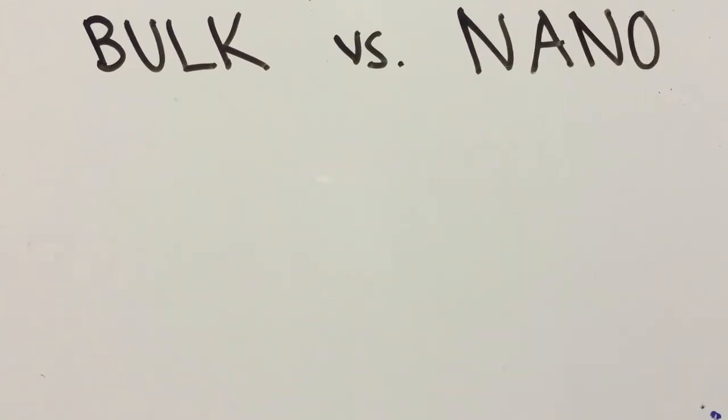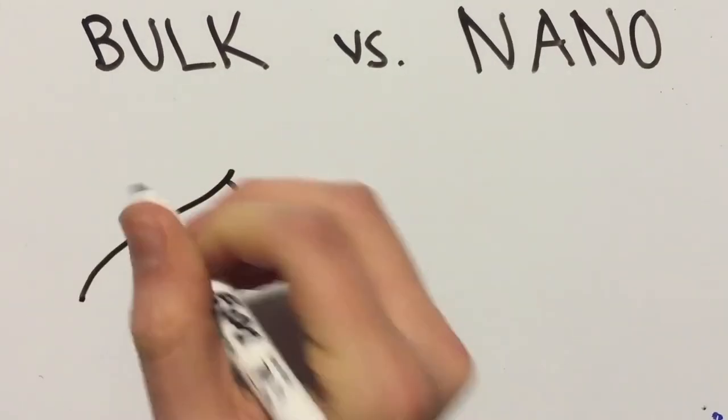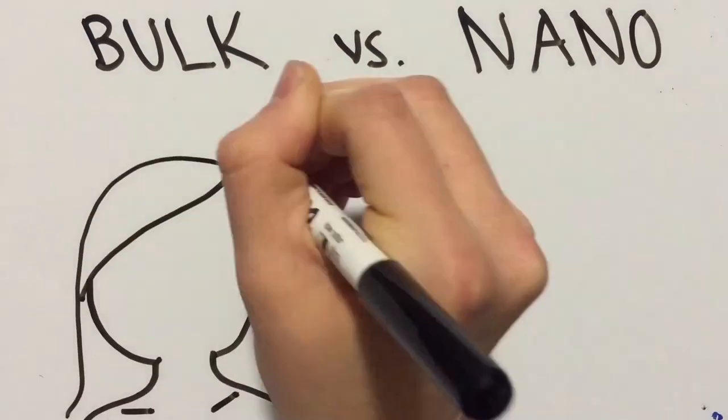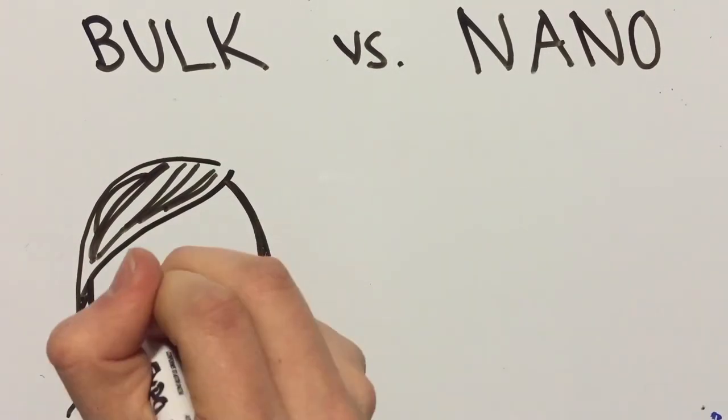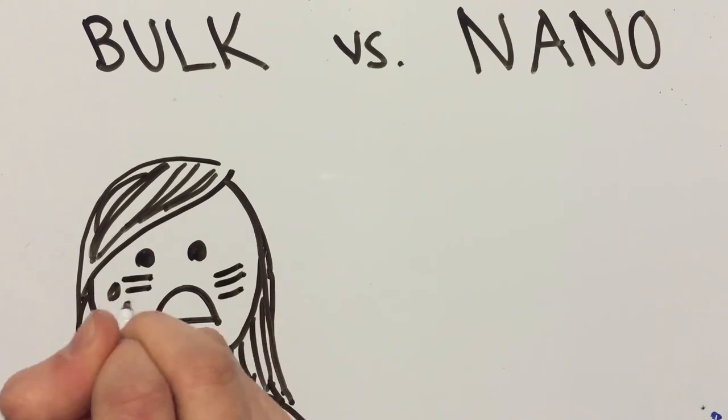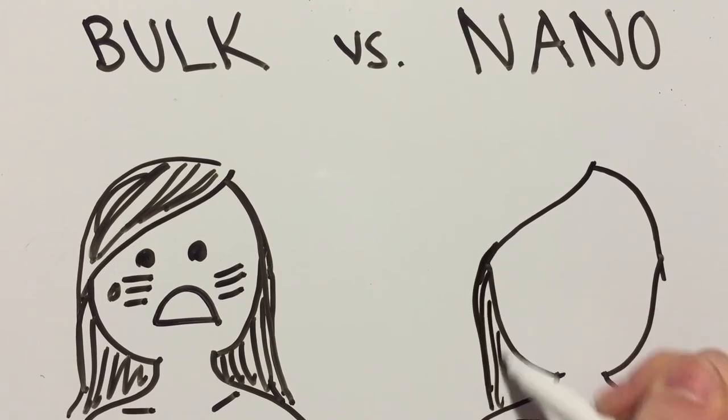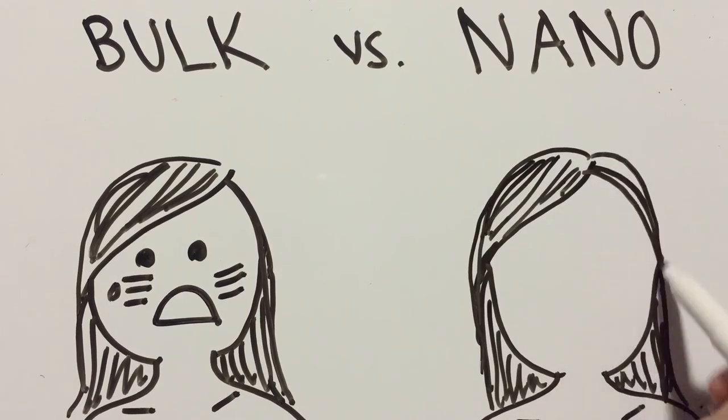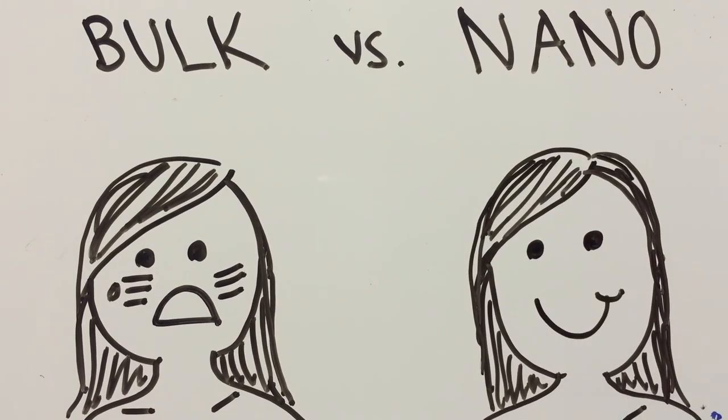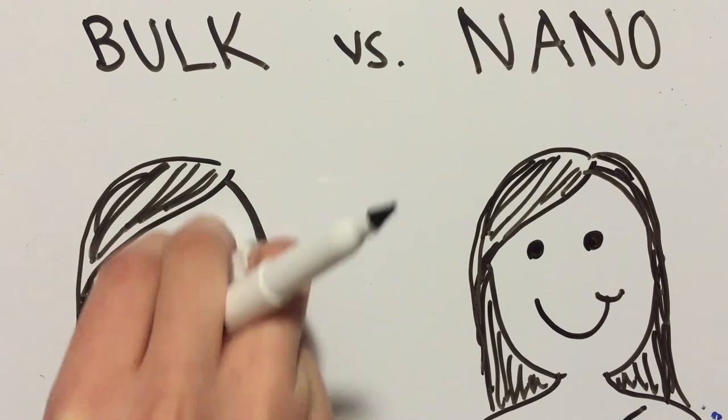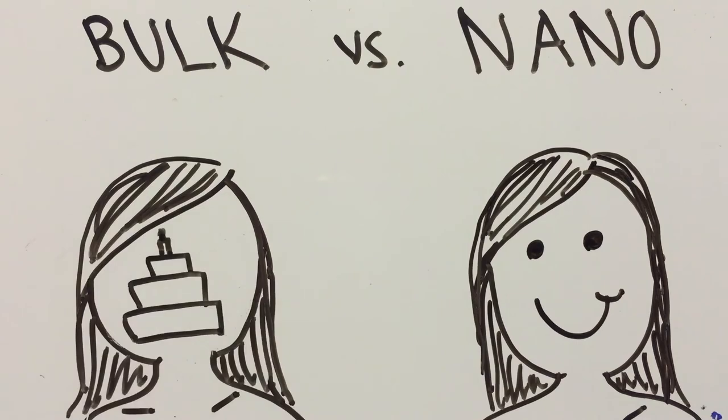Nanoparticles absorb most of the visible light spectrum, meaning that less light is reflected back into our eyes. This gives nano sunscreen a transparent appearance instead of the white streaks left behind by traditional sunscreens. As an added bonus, sunscreens with nanoparticles feel lighter on the skin, resulting in a less cakey feeling in comparison with sunscreen formulas containing larger particles.